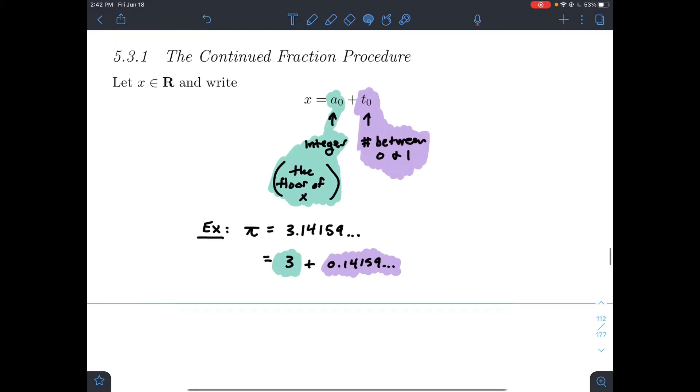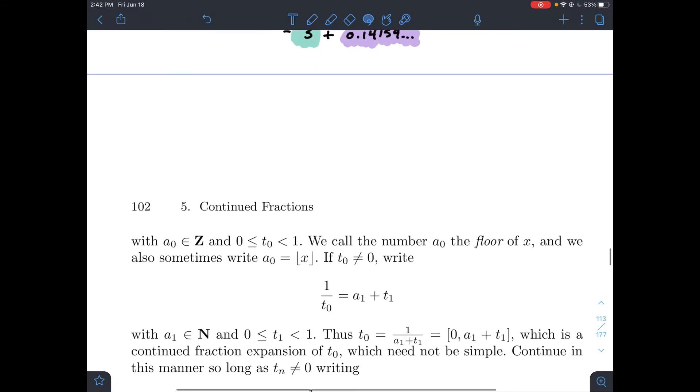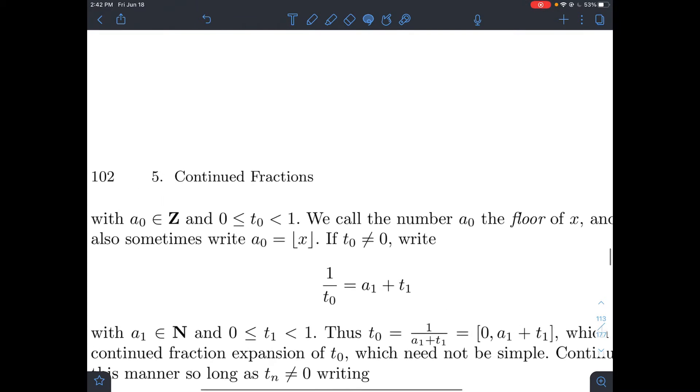We can always split a real number into these two pieces here. This is going to help us create a little algorithm that will help us get the continued fraction representation of the number x. Once we do that, we've got our integer a0, and t0 is a real number between 0 and 1.